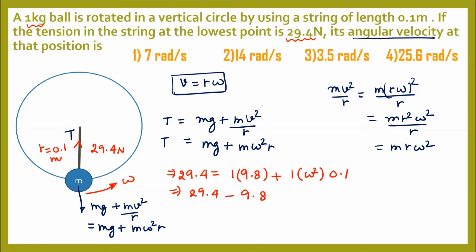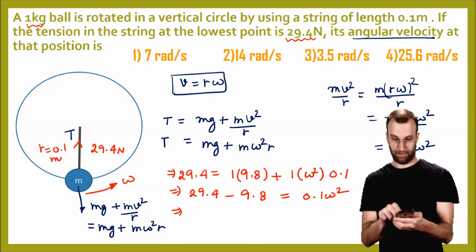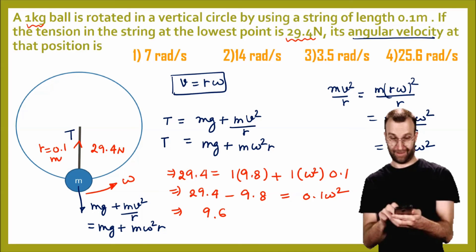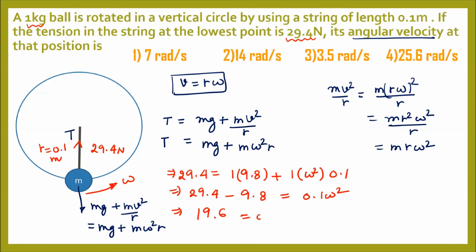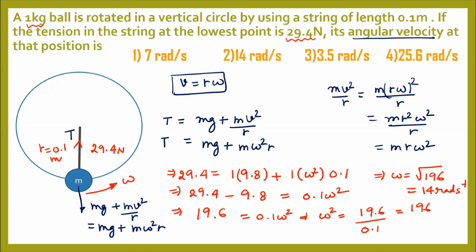29.4 − 9.8 = 0.1ω², giving 19.6 = 0.1ω². Therefore ω² = 19.6 / 0.1 = 196. So ω = √196 = 14 radians per second. That is our final result.